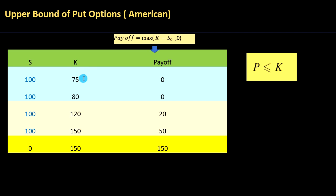Assuming this is an American put option with a strike of $75, you could exercise your option and sell this stock for $75. But you wouldn't exercise this option — you could sell the stock for $100 in the market, so why would you sell it for $75? Why would you sell something for less when you can sell it for more? Therefore the payoff of this option would be zero.